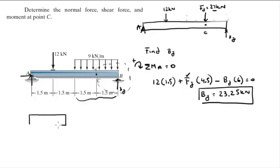Now that we have By, we can use the method of sections to cut from C to the right. The new section is this short little section from C to B with the reaction By.